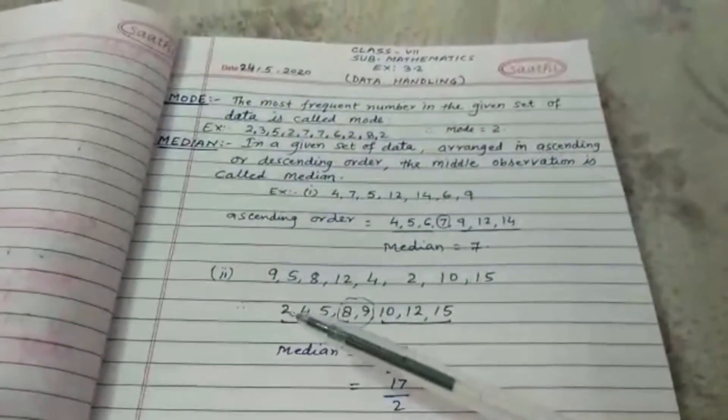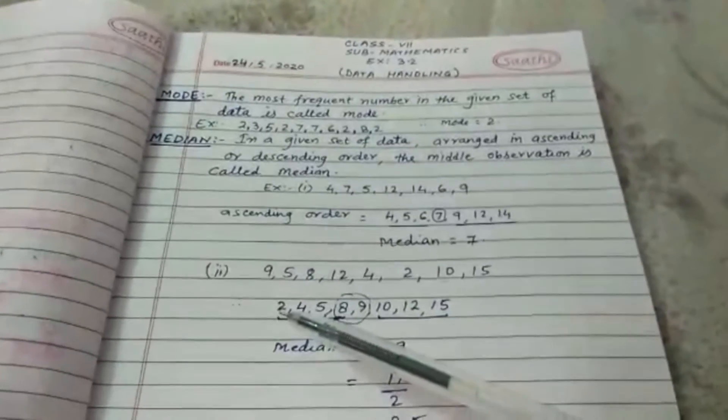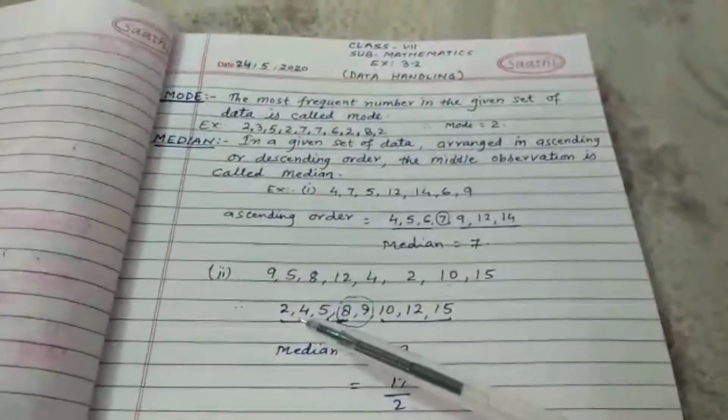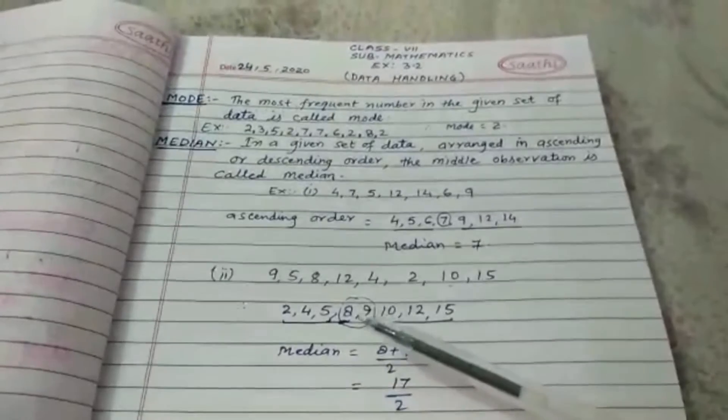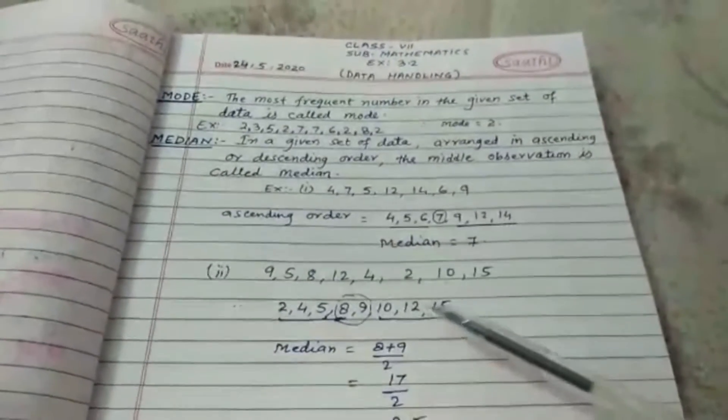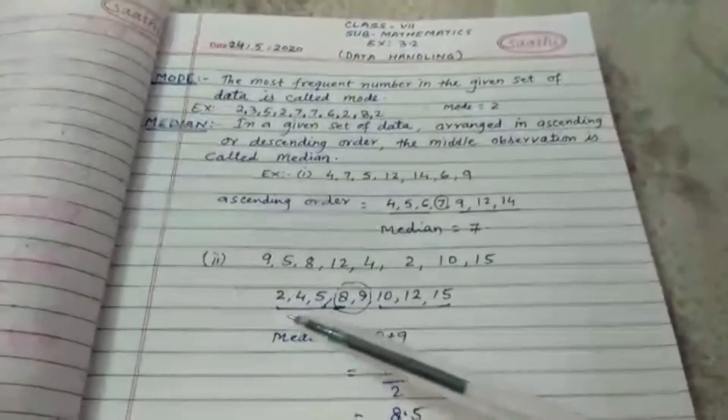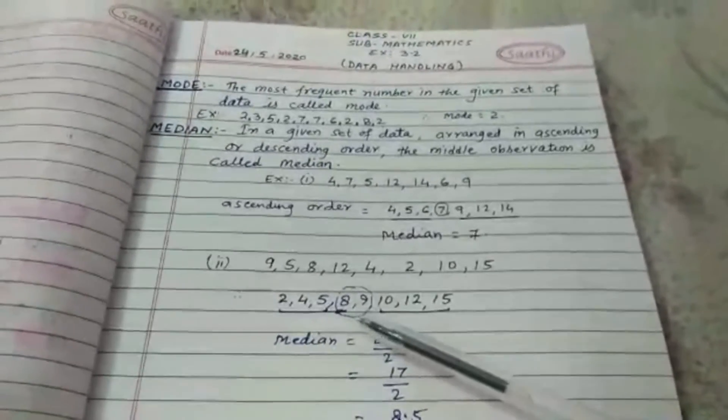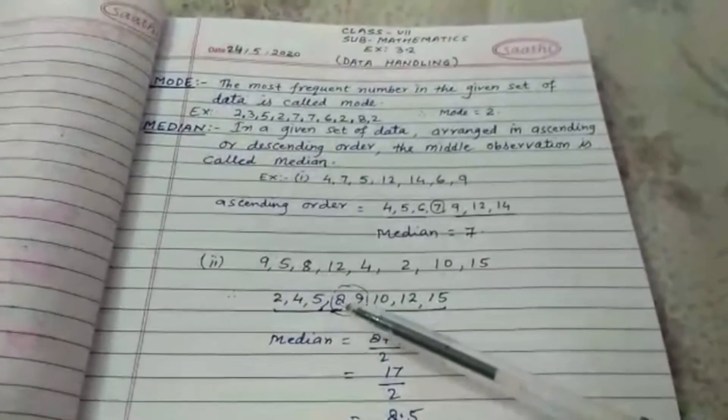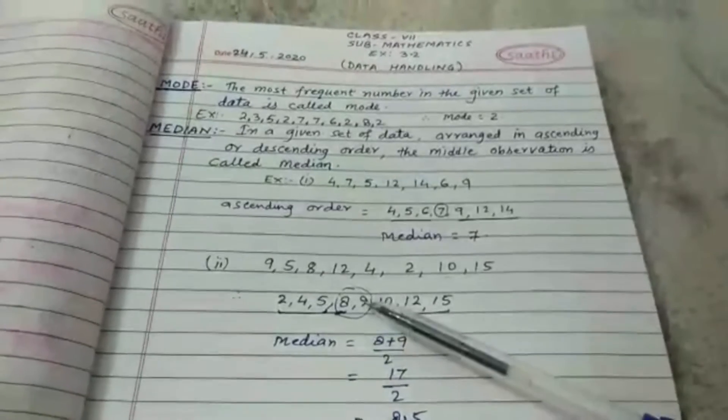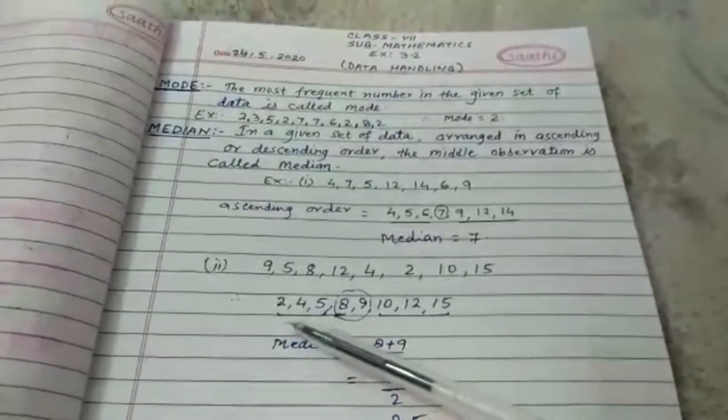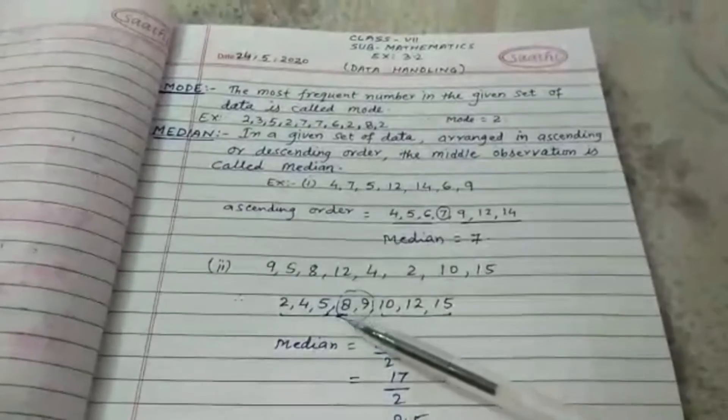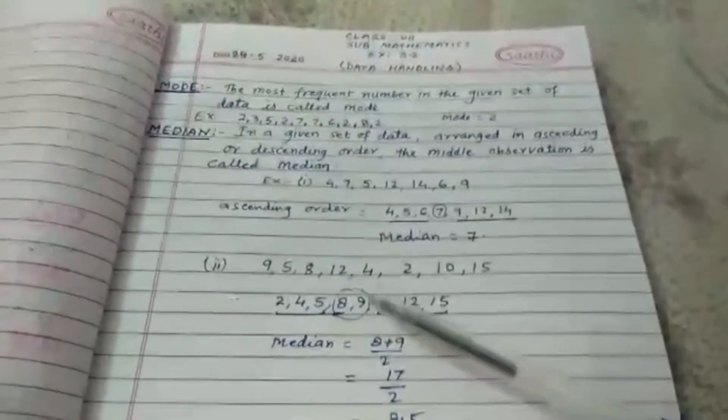Just like first, we have to arrange the given data in ascending order: 2, 4, 5, 8, 9, 10, 12, and 15. Therefore, the median is, in this case, the median is the mean of two middle terms. Just leave 3 terms here and 3 terms here, and the two middle terms are 8 and 9.